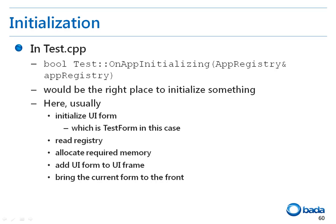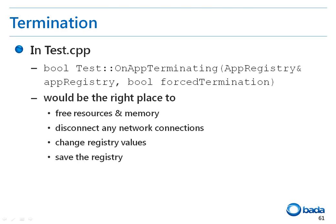The onAppInitializing function also displays the form on the screen. The onAppTerminating function that terminates the application is also implemented in the test.cpp file. This function frees allocated memory and resources, disconnects the connected network, and changes and saves the registry values if they have been changed.